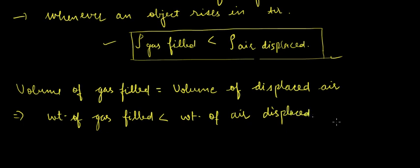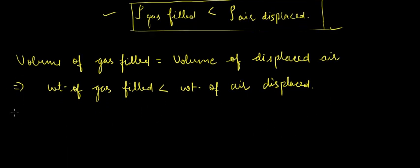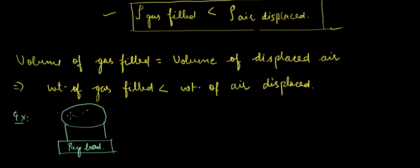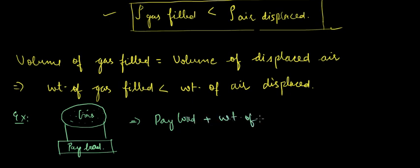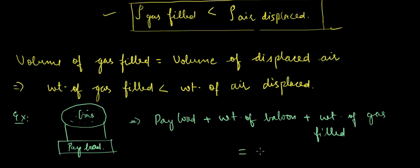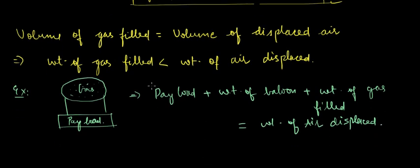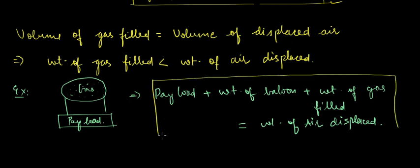For example, suppose this was the weight of an object to be lifted and this was our balloon with some gas filled. We can write that: payload plus weight of balloon plus weight of gas filled should be at maximum equal to the weight of air displaced. This is the maximum payload that can be lifted by a balloon, and from this equation we can calculate the payload.